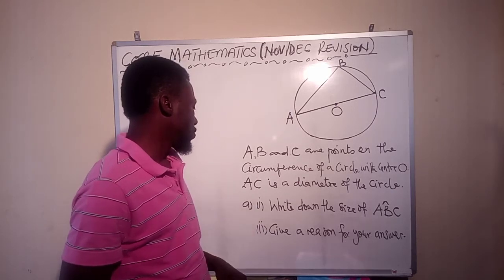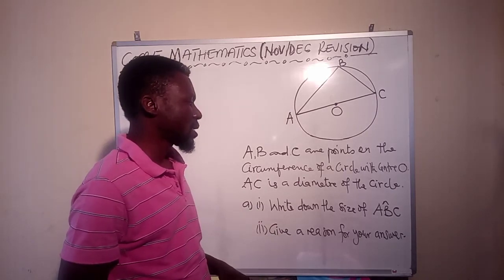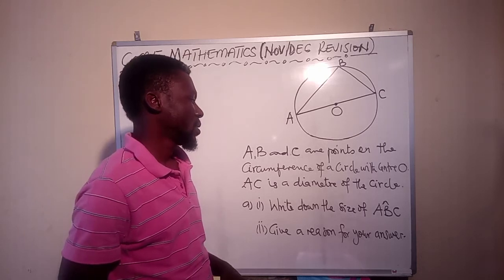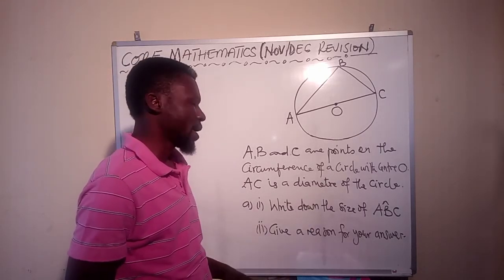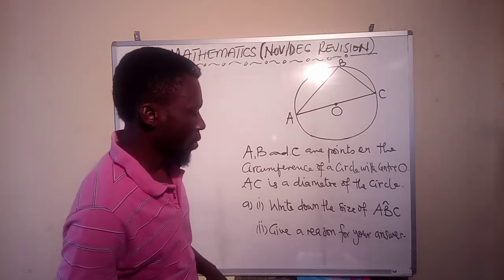That AC is the diameter of the circle. So question A(i) says write down the size of angle ABC, and then give reason for your answer.